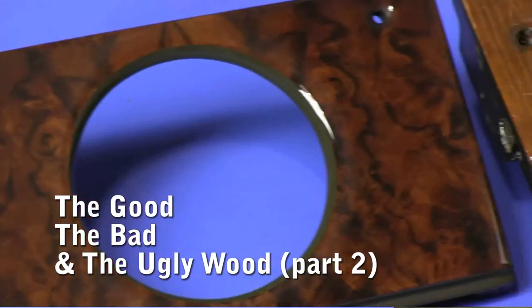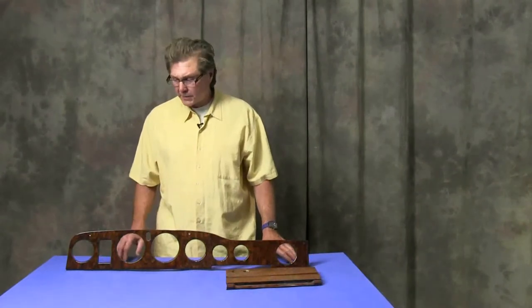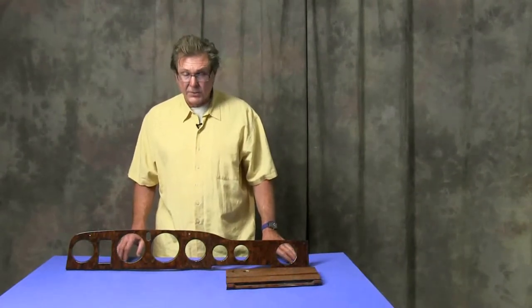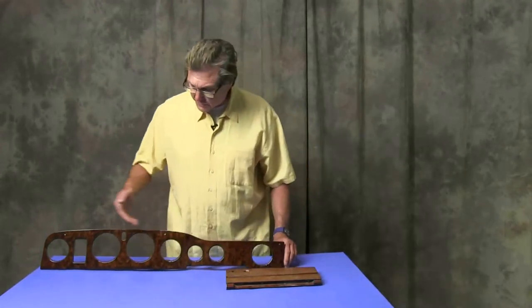A little demonstration of a before and after in a current project. This is wood out of a late Shadow II, that is a late 70s car, Rolls-Royce, and this is the main instrument fascia.